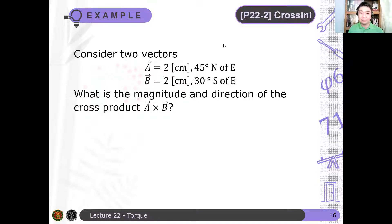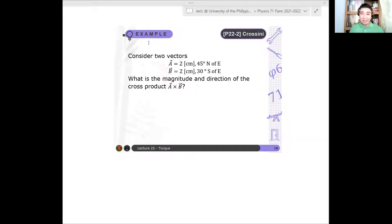Okay, a minute has elapsed to solve this problem. So again, A is 2 cm, 45 degrees north of east, and B is 2 cm, 30 degrees south of east. Let's draw the problem.